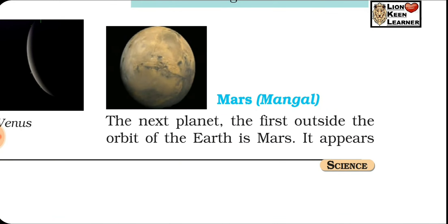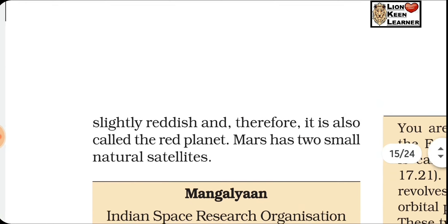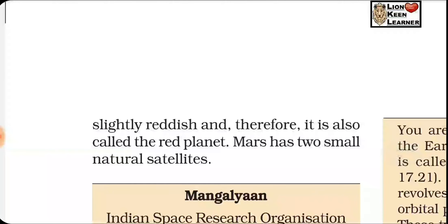Mars, called 'Mangal Grah' in Hindi, is the next planet — the first outside the orbit of the Earth. It appears slightly reddish, and therefore is also called the Red Planet. Mars has two small natural satellites. Its diameter is 6,780 km, distance from sun is 228×10⁶ km, and it completes one revolution around the sun in 687 days.